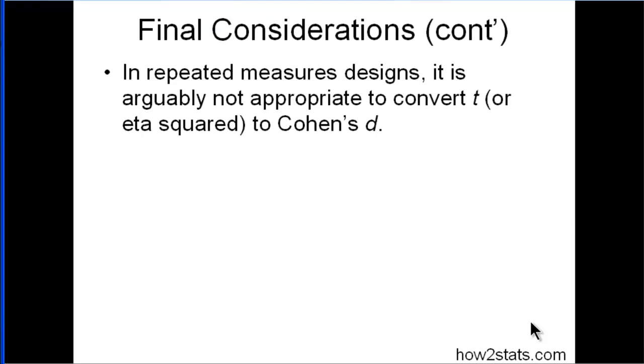The last thing I'm going to mention, which is a little bit specific and might be a little bit complicated, is about repeated measures designs and using an estimate of Cohen's D in this context. In my opinion, and in the opinion of others, it's not appropriate to convert eta squared into Cohen's D from a repeated measures design ANOVA.